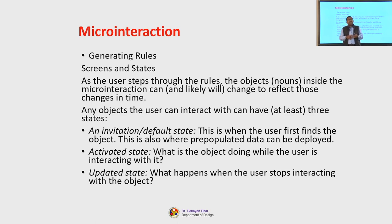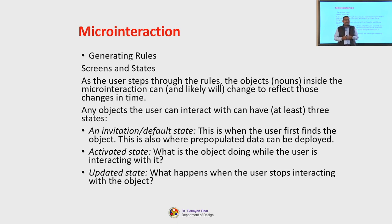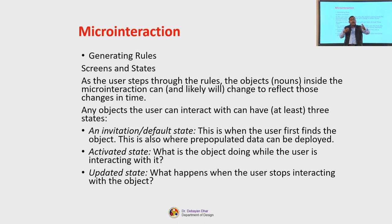The second one is the activated state. This is the state — what is the object doing while the user is interacting with it? So during the process of interaction, the object being used to activate a particular situation, to activate a particular event and action — how does that happen? What information is being transferred to the user to communicate that state?